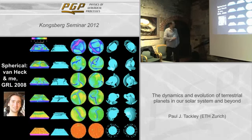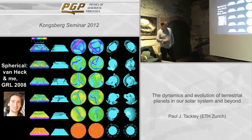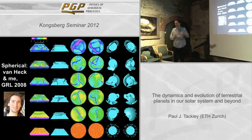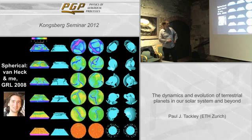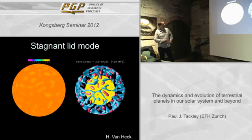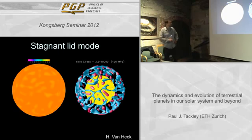A former student ran these types of experiments in 3D spherical geometry instead of Cartesian geometry, and we get the same types of transitions: stagnant lid at high yield stress, something like plate tectonics at intermediate yield stress. This is the stagnant lid mode — the lithosphere hardly deforms and small-scale convection takes place below the stagnant lid. Blue is cold and red is hot.